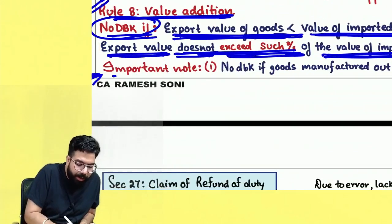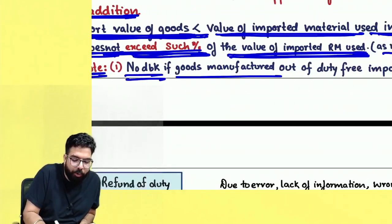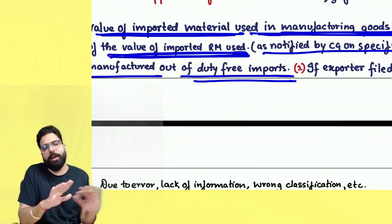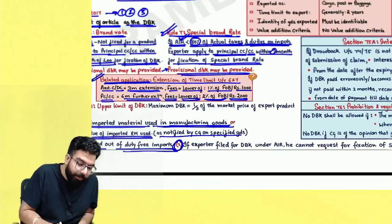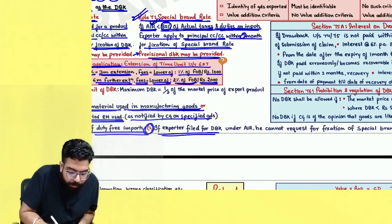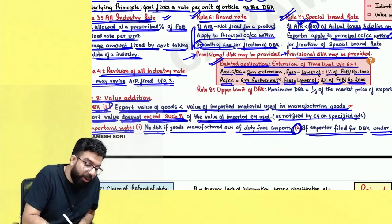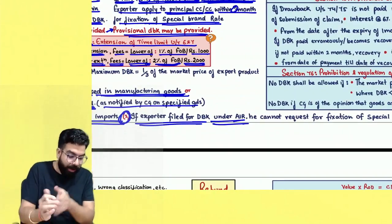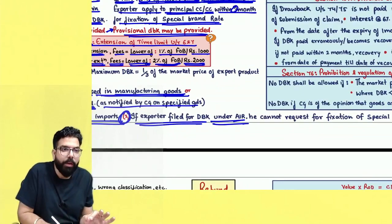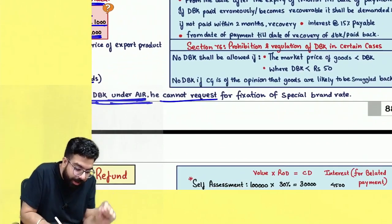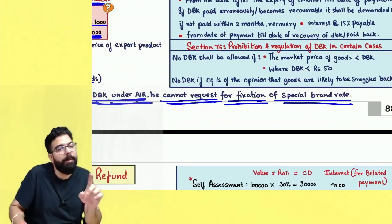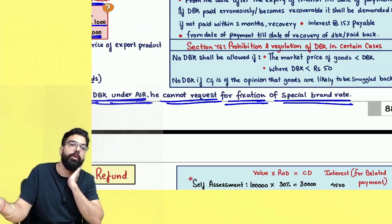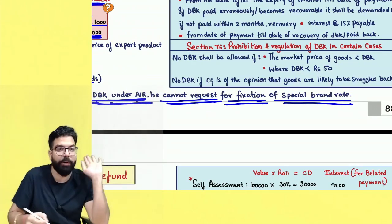Important notes: No duty drawback if goods are manufactured out of duty-free imports — if no duty was paid, what drawback will you get? Also, if an exporter has filed for duty drawback under all industry rate, they cannot also request fixation of special brand rate. Both cannot be claimed simultaneously. If applying for special brand rate, you can take provisional duty drawback, but not all industry rate duty drawback as well.